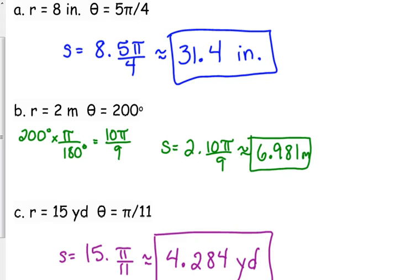However, on part B, 200 degrees, that's more than half of your circle. So it makes sense that our answer is bigger than our radius. And then the same thing with part A: 5 pi over 4. 5 pi over 4 is more than half of your circle, because pi would be half of our circle. So 5 fourths is just a little bit bigger than one pi. And then 8 inches, it has a much bigger radius. So it makes sense that that answer is a little bit bigger.